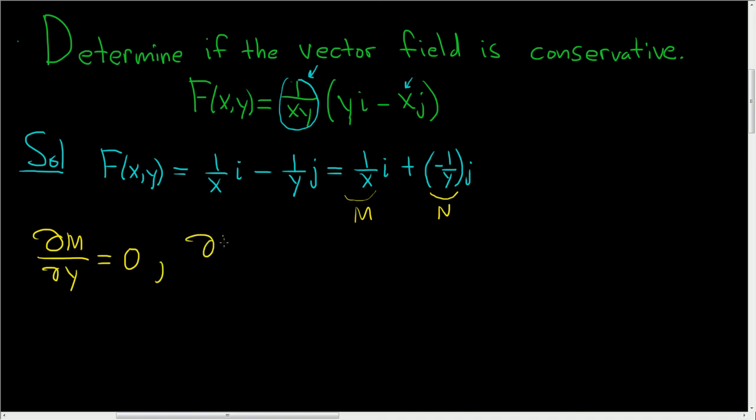And then we look at del N del x. Again, there is no y terms here, and we treat this as a constant, so we get zero. Both of these are continuous functions. And moreover, del M del y is equal to del N del x.